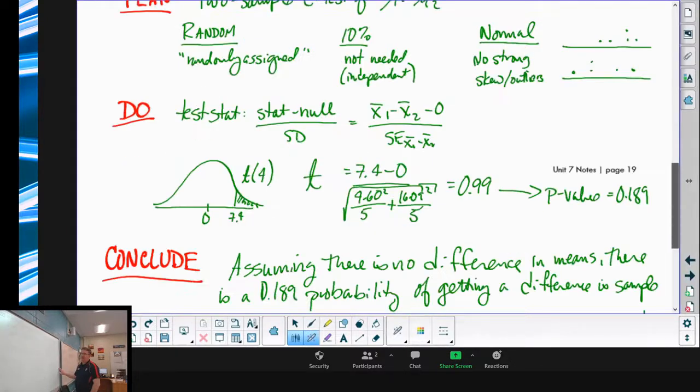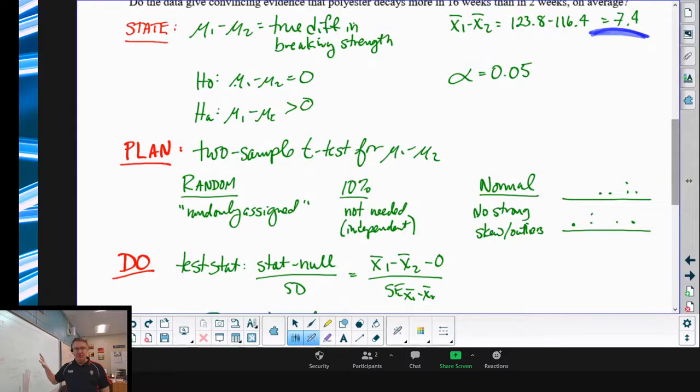So let's do the plan. Two sample t-test from mu1 minus mu2. We have random assignments, so that's great. We don't have to worry about the 10% rule because they're independent. Everything was independently chosen and assigned, so we don't even have to worry about that. And then for normal, when you look at the two dot plots, there's no strong skew or outliers, so we're good to go there.